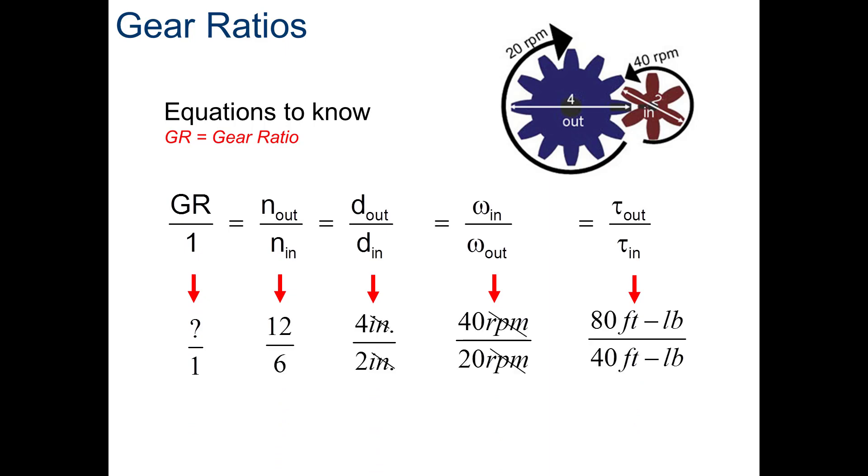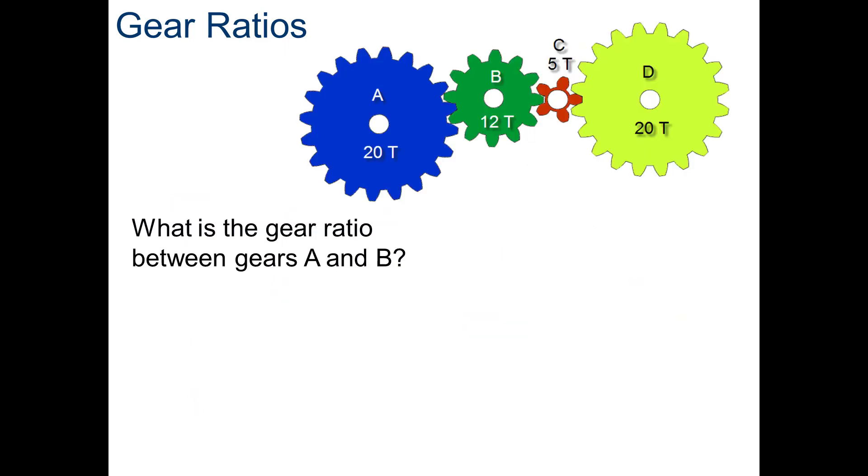Okay, so if we were to calculate the gear ratio of the gears up above, there are 12 teeth to 6 on the in versus the out. So, there is a 4 inch diameter out, 2 inch diameter in. There is 40 RPMs in divided by 20 RPMs out. And there's 80 foot-pounds of torque out and 40 foot-pounds of torque in. If you notice, all of those items equate out to a gear ratio of 2 to 1.